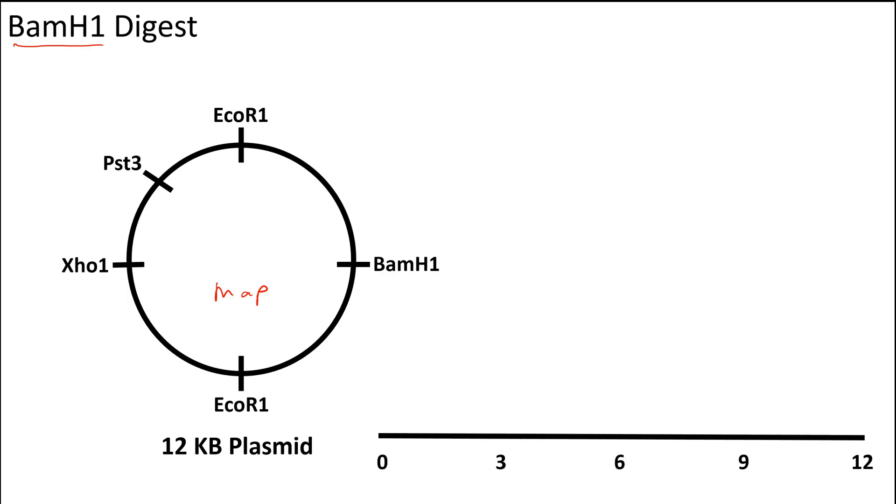So here in example one, we're going to do a single restriction enzyme digest. The restriction enzyme that we're using is BamH1. You can see here that there's only one restriction site for BamH1. So what this example shows is that if you digest a circular plasmid that has one restriction site for an enzyme, essentially what you do is linearize. So our 12 KB plasmid here remains 12 KB, so you'd get a single fragment of 12 KB in length. You're just linearizing the plasmid here since there are no additional sites and no additional fragments will be generated.